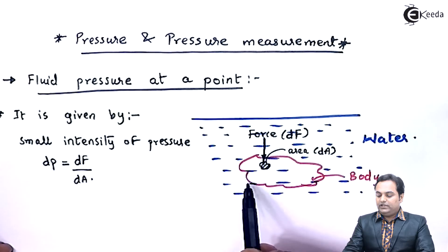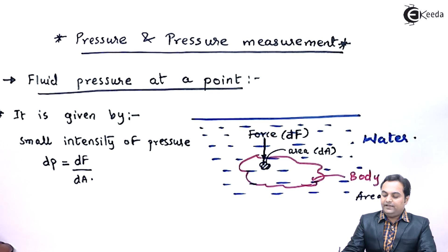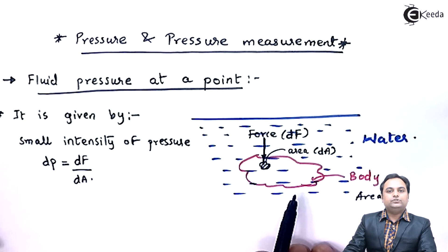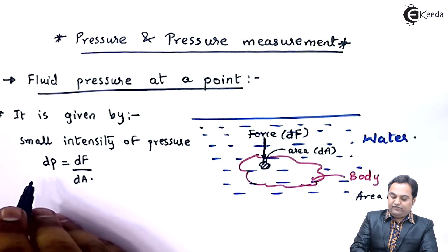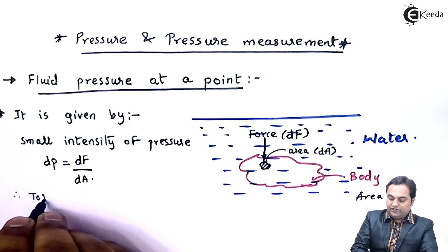Now if I consider the total area of the body which is capital A, so the force which would be acting on this body having area capital A would be denoted by capital F. So finally I will say that therefore total intensity of pressure...